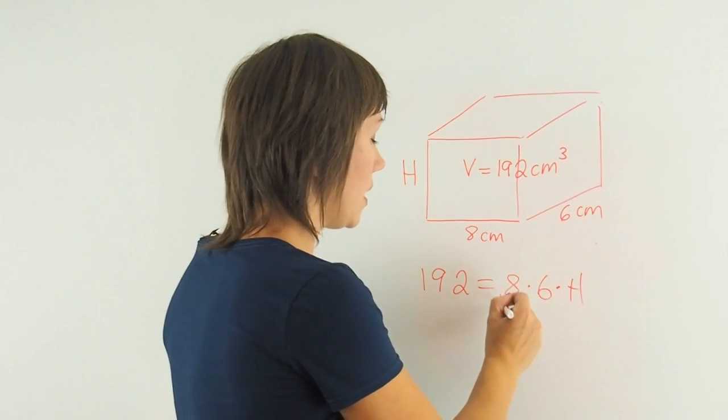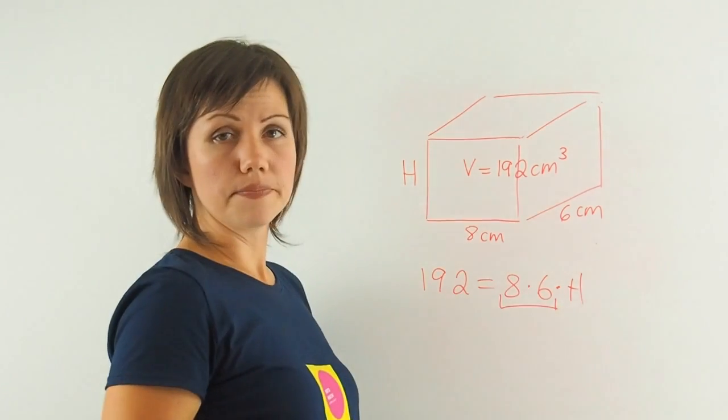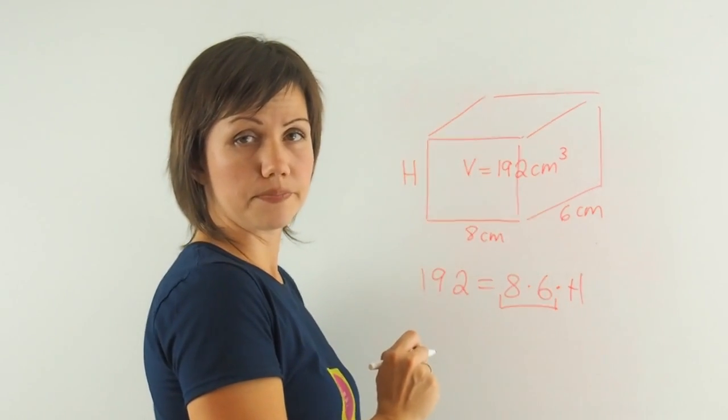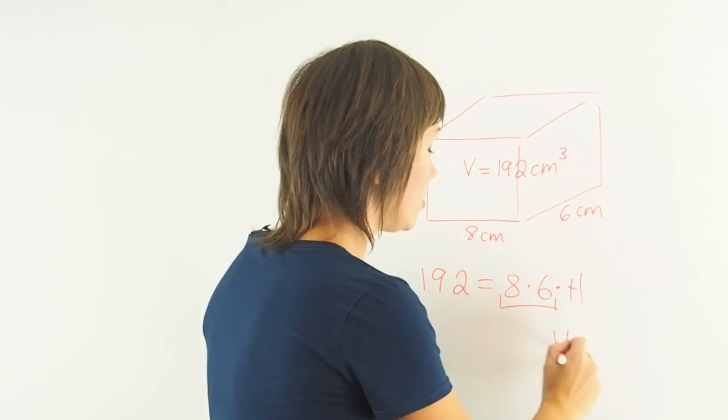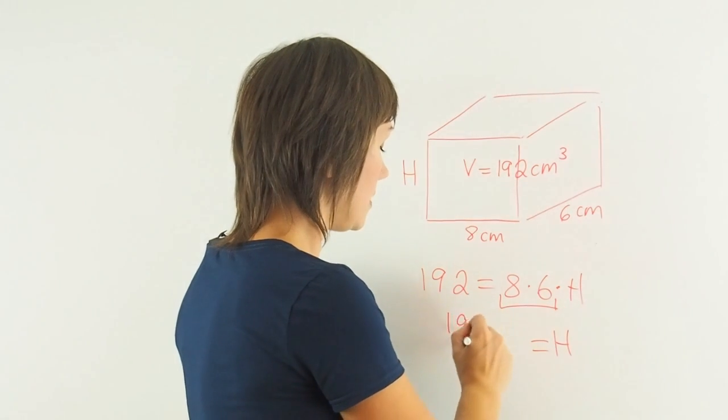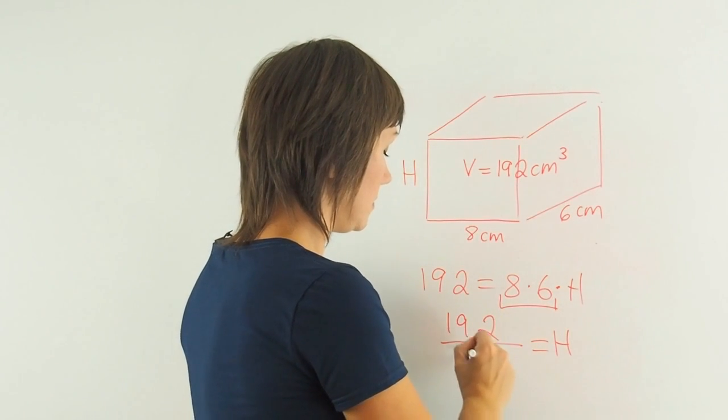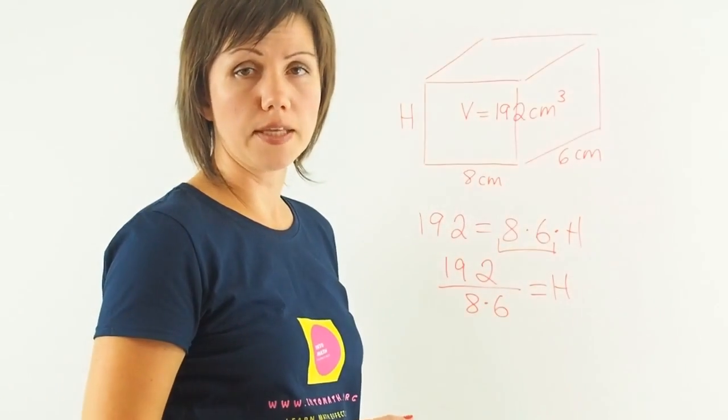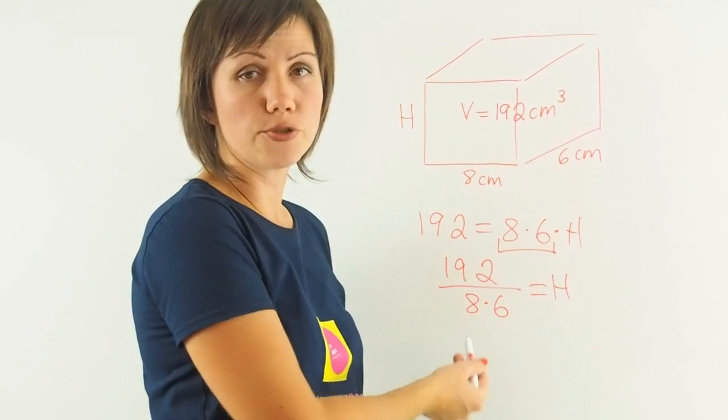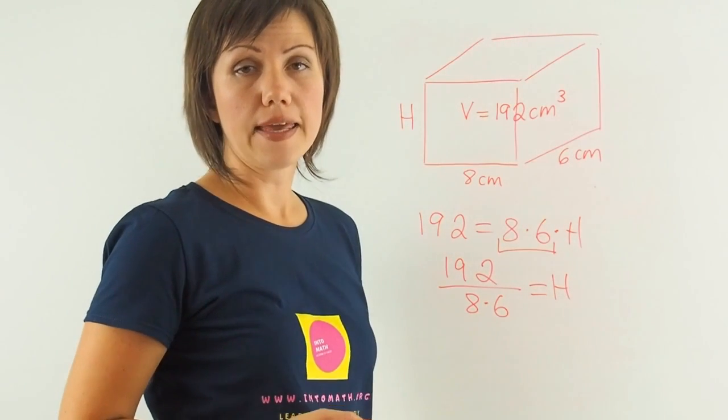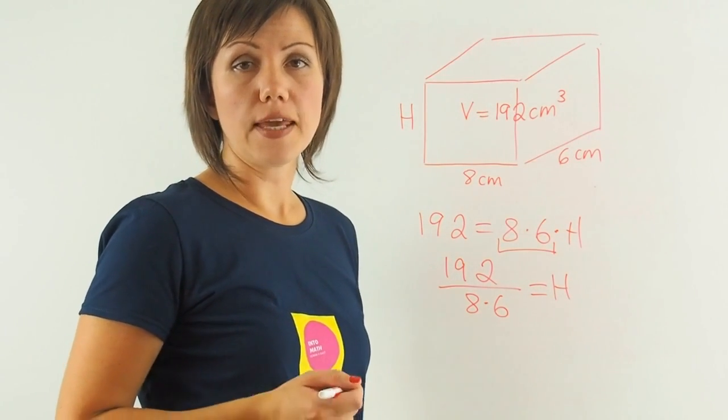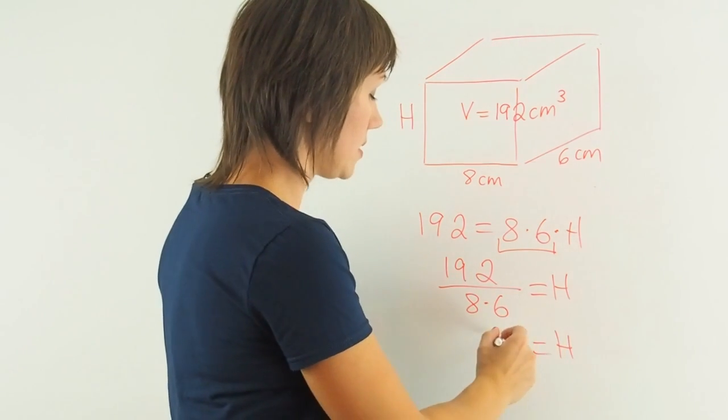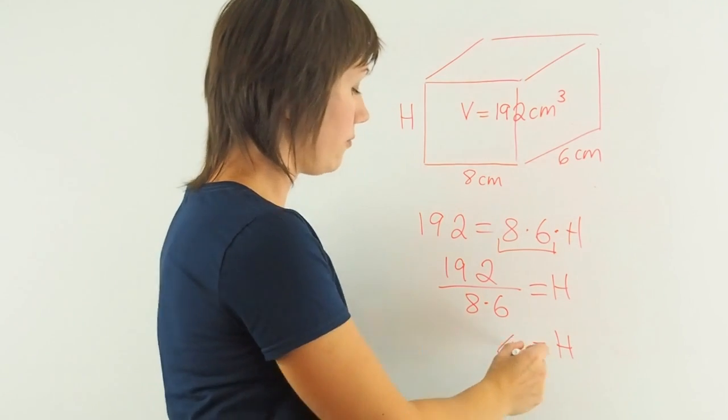So I'll multiply 8 and 6 and then I will divide 192 by that number in order to isolate the height. So 8 times 6 is 48 and 192 divided by 48 is 4. So the answer to this question is 4. The height of this prism is 4.